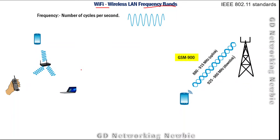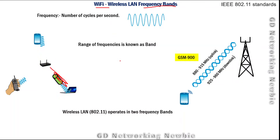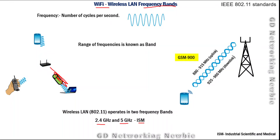Wi-Fi devices operate in two frequency bands. A range of frequencies is known as a band, and a band is like a water pipe through which signals are transmitted and received. Wi-Fi operates in two frequency bands: 2.4 gigahertz and 5 gigahertz, collectively known as ISM bands, which stands for Industrial, Scientific, and Medical. This ISM band is also used by other wireless technologies like wireless phones and Bluetooth devices.